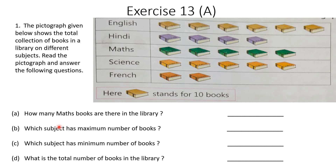The first question is: the pictograph given below shows the total collection of books in a library on different subjects. Read the pictograph and answer the following questions. They have given us different subjects and the collection of books in each subject. Here, one book stands for 10 books — that means whatever answer we get, we have to multiply it by 10.